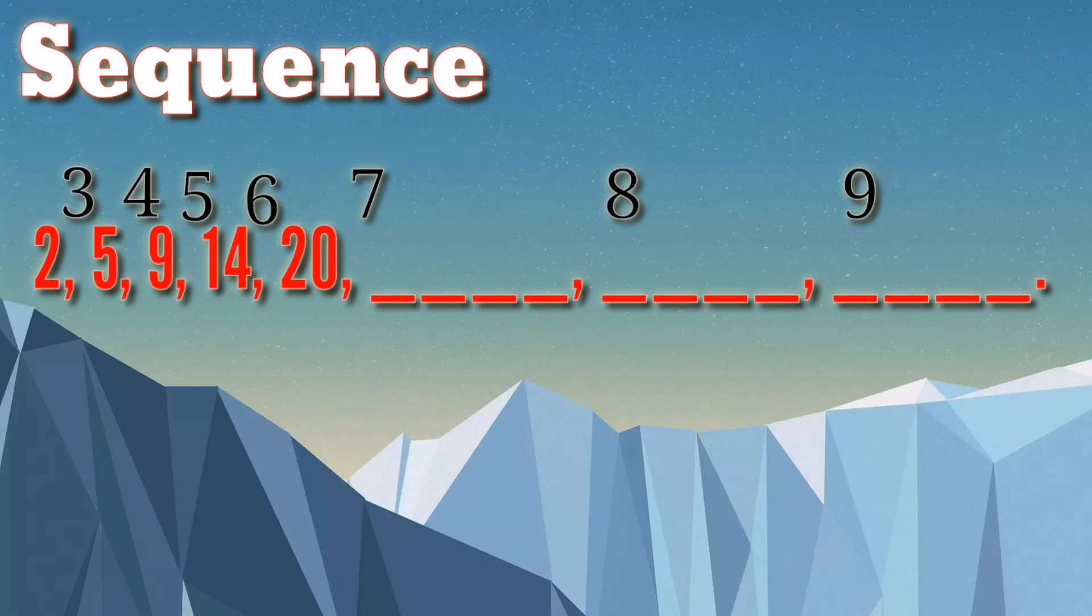Hence, the next 3 terms are 20 plus 7 is 27, 27 plus 8 is 35, and 35 plus 9 is 44.